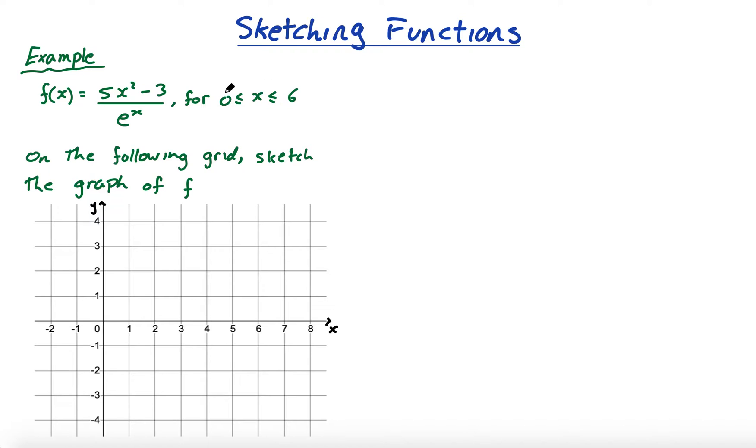Now what I mean by endpoints is, it says x goes from 0 to 6, so it's only this from 0 to 6. That means you cannot draw anything to the left of 0 or anything to the right of 6. If the graph starts at (0,0) and goes like this, you will immediately lose a mark because you've gone to the left of 0.